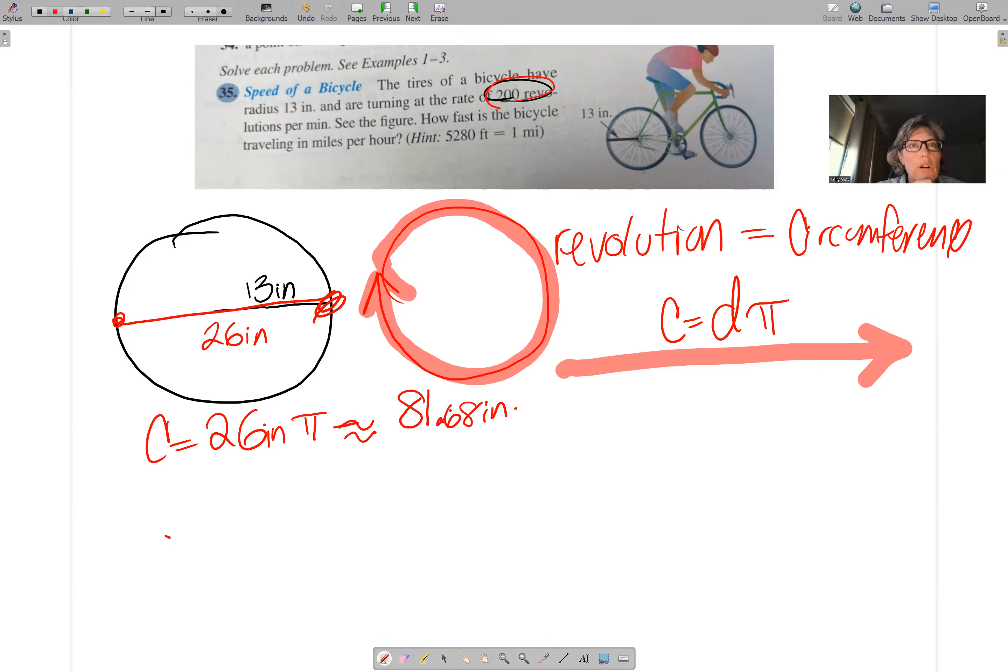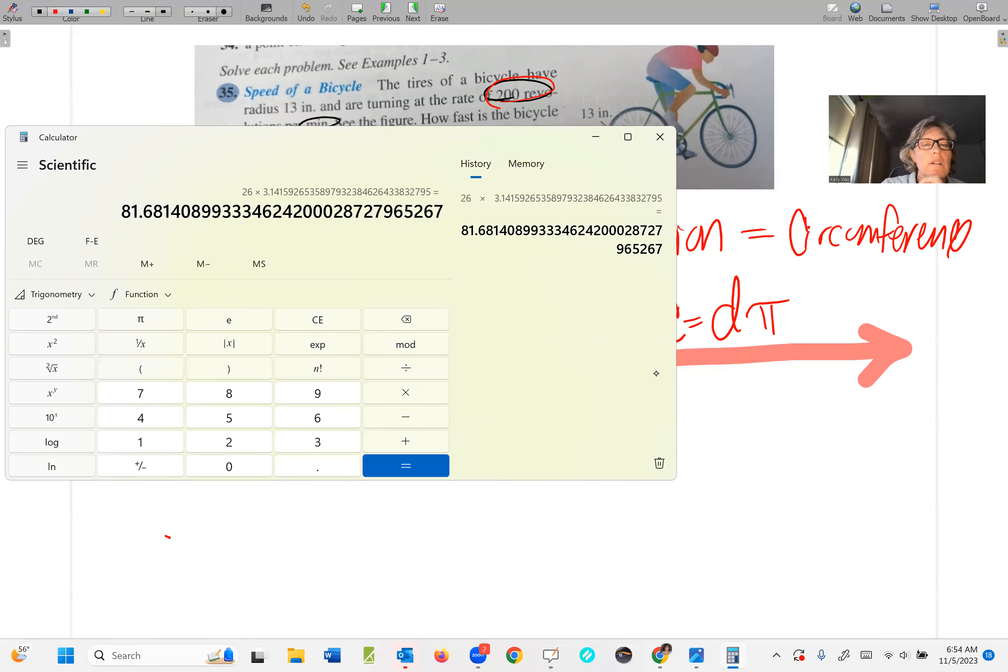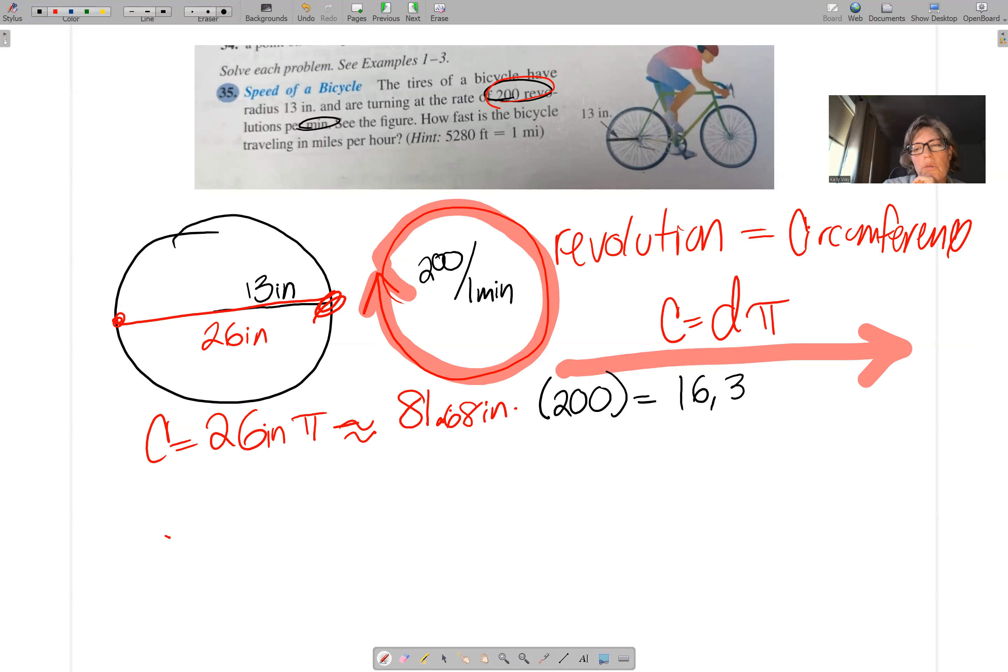And we are traveling 200 of those, 200 circumferences per one minute. So we need to get our conversion here. We're going to times that by 200 to get the original speed in inches per minute. So times 200. And that's 16,336.28. 16,336.28. And that's inches per one minute.